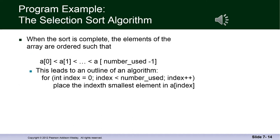When the sort is complete, the elements of the array, the index variables are ordered such that the first is smaller than the second, which is smaller than the third. This is called ascending order. And it leads to an outline of an algorithm. And we're going to use a for loop, for index equals zero, index less than number_used, index++, place the indexed smallest element in a[index].